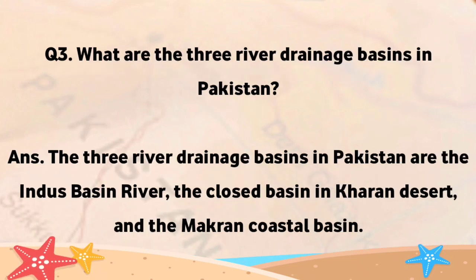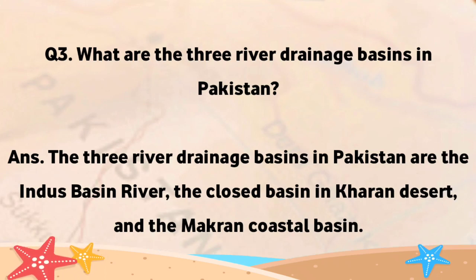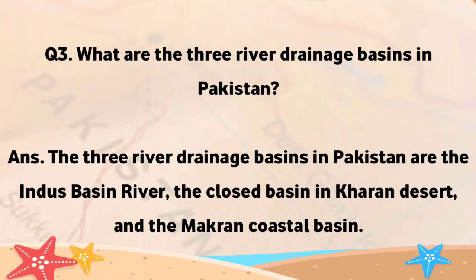What are the three river drainage basins in Pakistan? The three river drainage basins in Pakistan are the Indus Basin River, the Closed Basin in Karan Desert, and the Makron Coastal Basin.